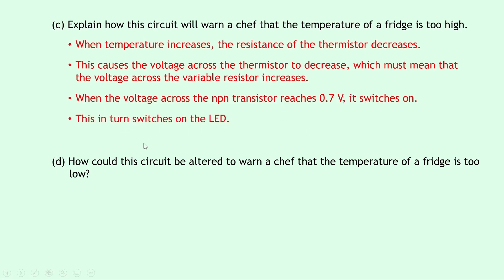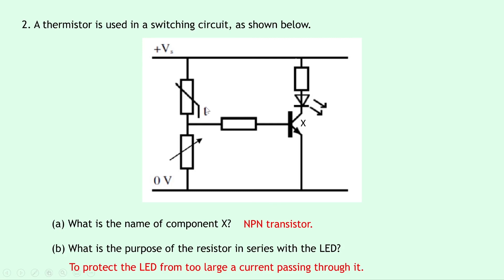Lastly, part D says how could this circuit be altered to warn a chef that the temperature of a fridge is too low? Well right now it's designed to warn a chef about the temperature of the fridge becoming too high. So in order to warn it about the temperature becoming too low, all we have to do is swap the positions of the thermistor and the variable resistor. So looking at the circuit diagram, that just means swapping the thermistor here to make it the lower component, and then putting the variable resistor up where the thermistor is.